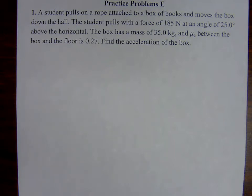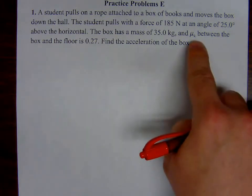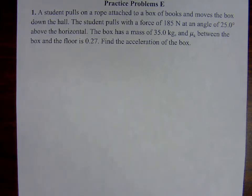The box has a mass of 35.0 kilograms, and the coefficient of kinetic friction between the box and the floor is 0.27. We need to find the acceleration of the box. We have a couple of pieces of information here. Before we start calculating, let's draw our coordinate system and a diagram.